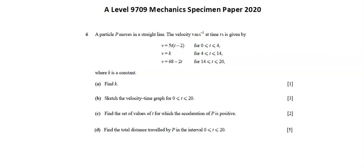Requirement C, find the set of values of t for which the acceleration of P is positive. Requirement D, find the total distance traveled by P in the interval 0 is less than or equal to t is less than or equal to 20. We'll work through these calculations on separate boards. Let's start with A.